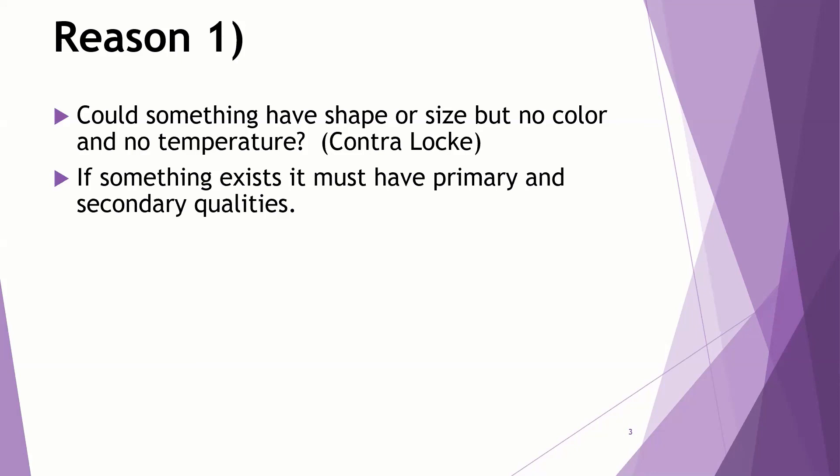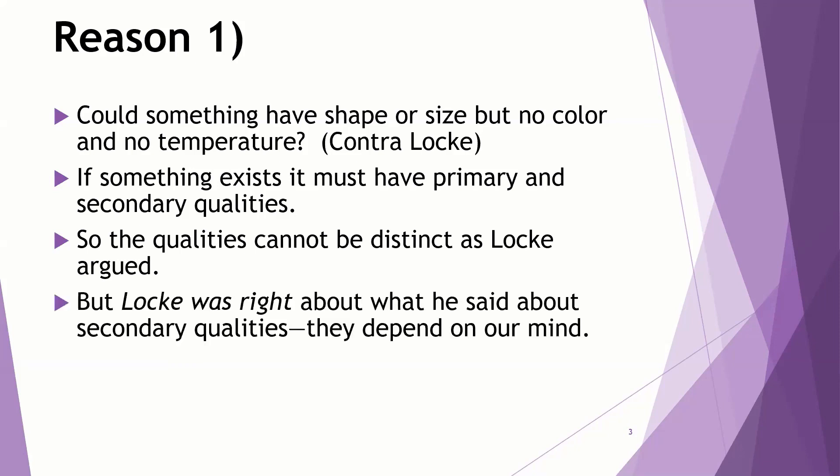And that's a rhetorical question. Berkeley's answer is they couldn't. That's not possible. It doesn't make any sense. So if something exists, it must have both primary and secondary qualities. Now what Locke thought is that objects only have primary qualities, the secondary qualities are things that only exist in our mind. And so Berkeley says you cannot make that distinction. The qualities can't be separated in the way that Locke described. However, Locke was right in his reasoning process for claiming that secondary qualities are in the mind. They do, in fact, depend on our mind. But both of them, both primary and secondary qualities depend on our mind.